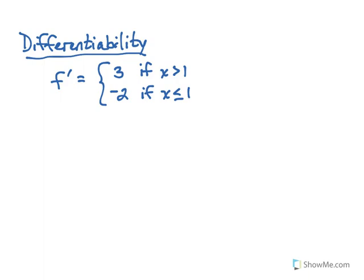Really we're looking specifically at 1. The derivative from the left at 1 is negative 2. The derivative from the right at 1 is 3, and obviously they're not equal. And that's why it ends up not being differentiable at x equals 1.